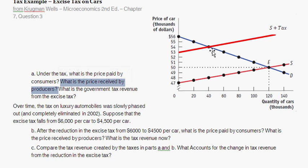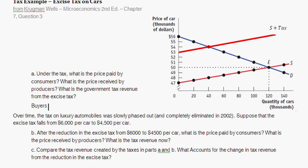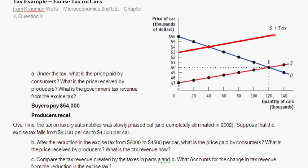What is the price received by producers? Producers are selling the car for $54,000. However, the excise tax is $6,000, so producers receive $54,000 minus the $6,000 excise tax, which equals $48,000. To summarize: buyers pay $54,000, and producers receive $54,000 minus the $6,000 excise tax, resulting in $48,000 paid to the producers.